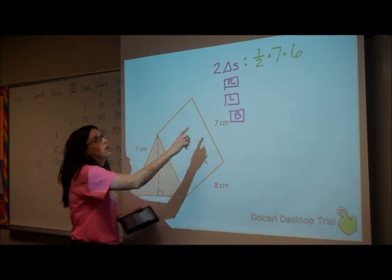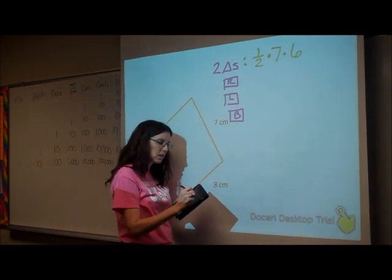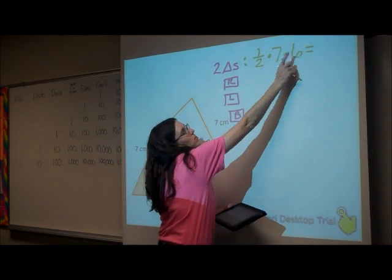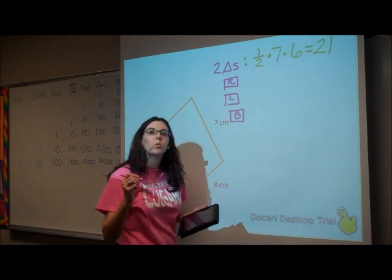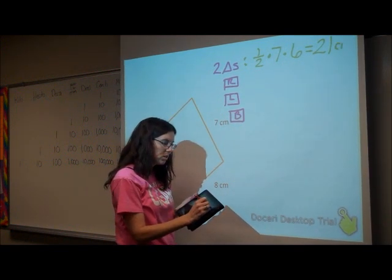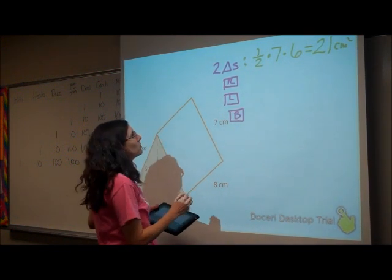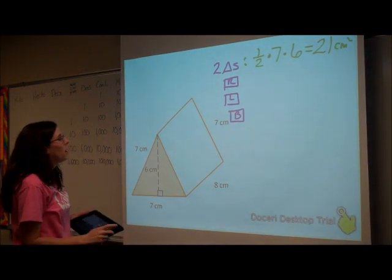So for the area of this triangle, one-half times seven times six will be... One-half of six is three. Three times seven will be 21. We're dealing with area, so it's centimeters squared.